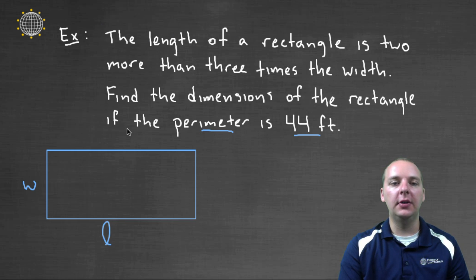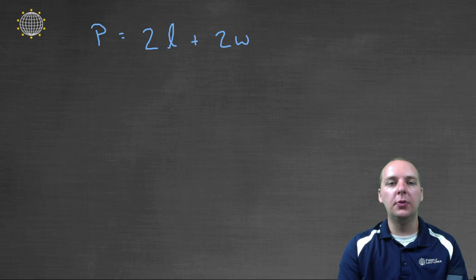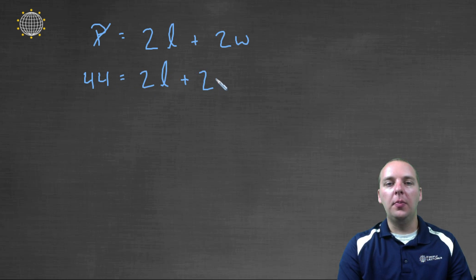Now some things are obvious, like for instance it says the perimeter is forty-four feet. So right off the bat, I could take the P out, and replace that with a forty-four. So that's good.